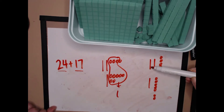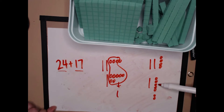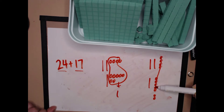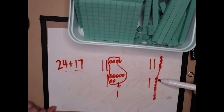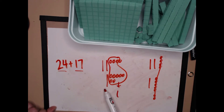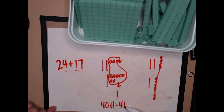Over here I chose to draw twenty-four and seventeen with vertical ones. Now I'll make a ten stick: five, six, seven, eight, nine, ten. So instead of circling them I make them into a ten stick and I have one left over. Ten, twenty, thirty, forty, plus one. Forty plus one equals forty-one.